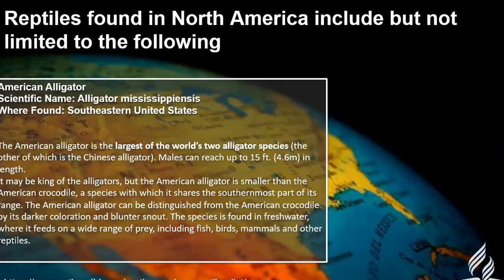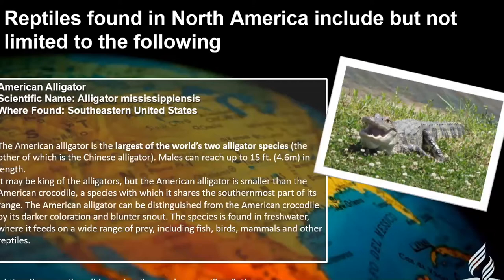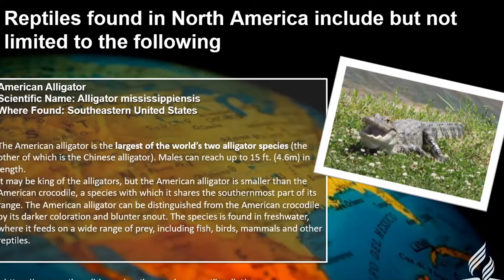The American alligator is the largest of the world's two alligator species — the other being the Chinese alligator. Males can reach up to 15 feet in length. We have similar species here in Belize. The American alligator is smaller than the American crocodile, a species which shares its southern range. This species is found in fresh water and feeds on a wide range of prey including fish, birds, mammals, and other reptiles.